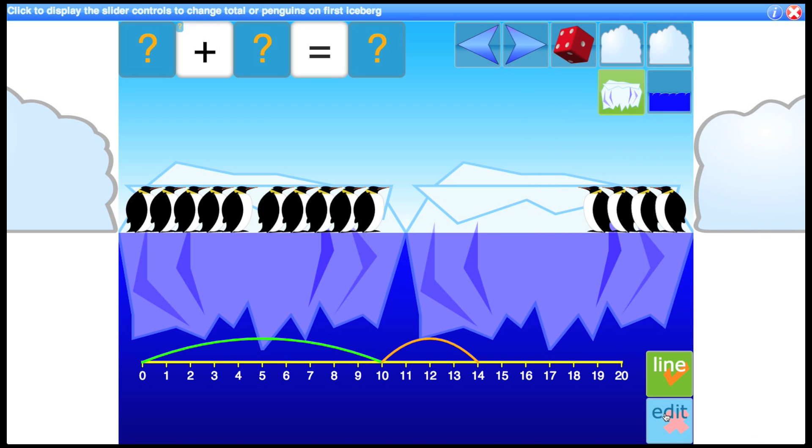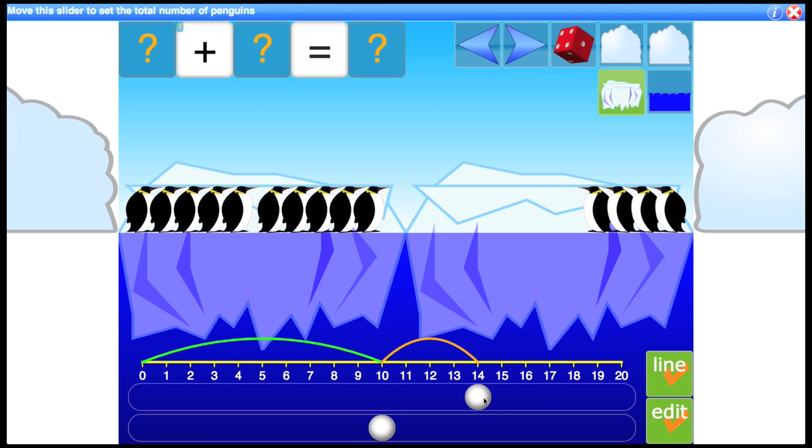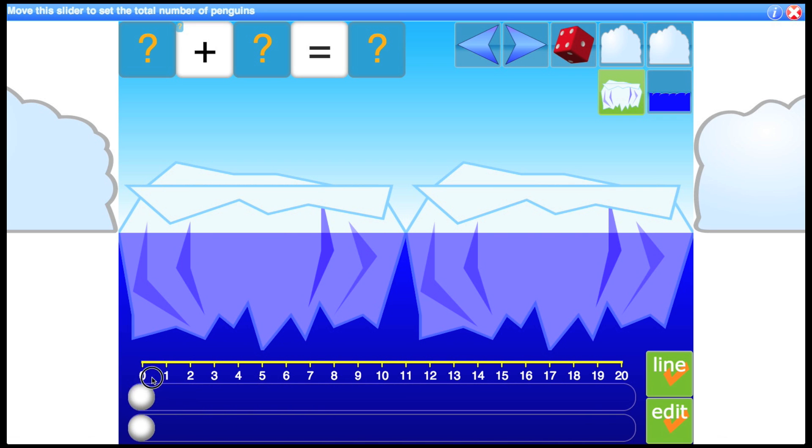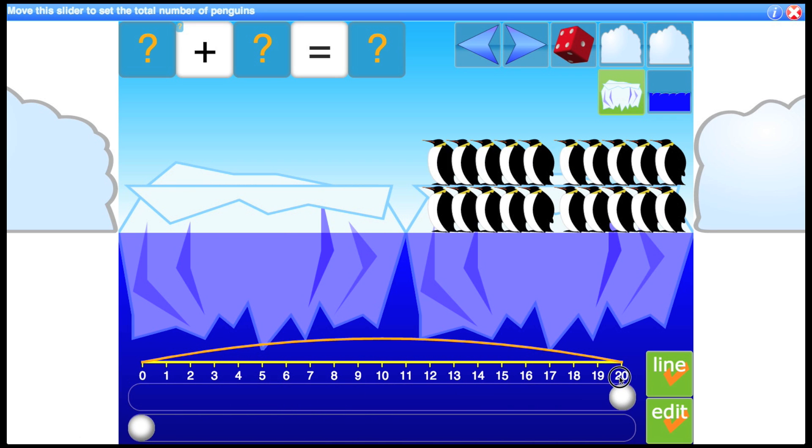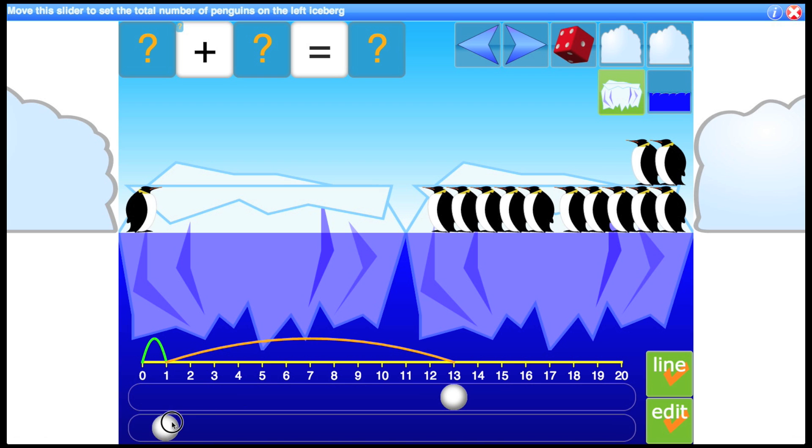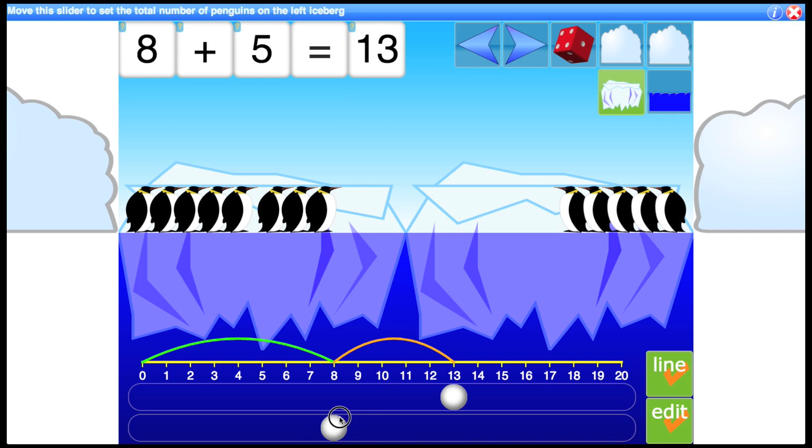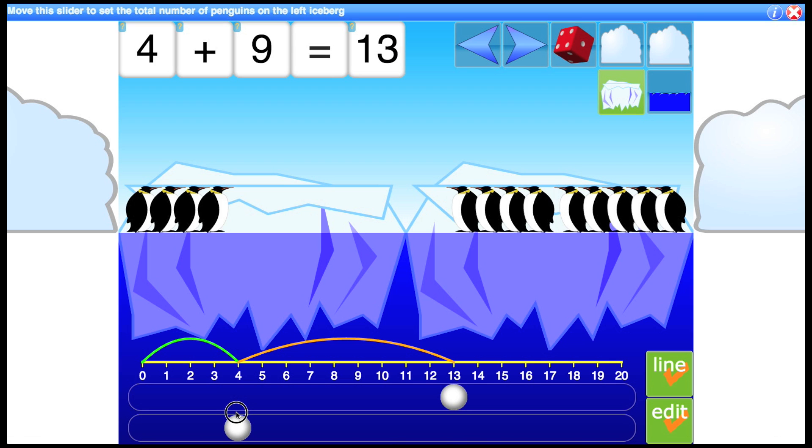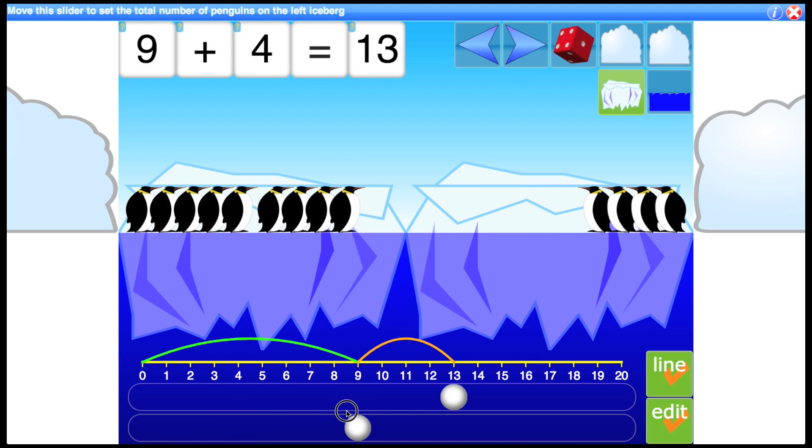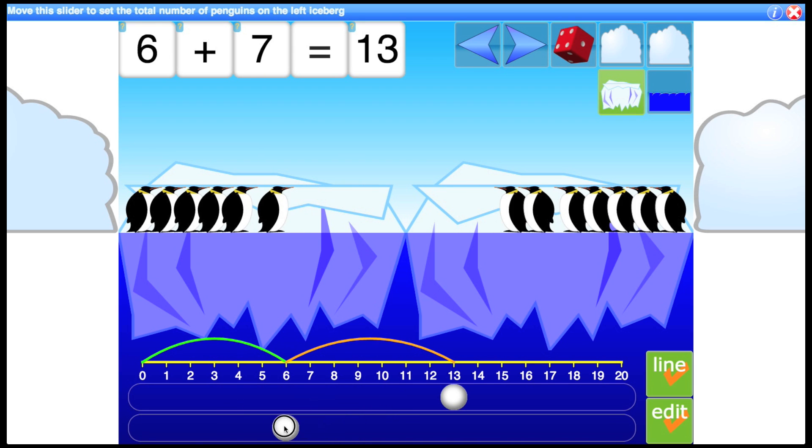Okay, now there's another way you can change the number of penguins which is by clicking this edit and we get two slider controls to appear. The first one sets the total, so we can see this instantly updates. So you can pick any number up to 20, and the second one is how many are on the first iceberg. So there's 6, 7, and we can see very quickly, and this would update the actual addition fact at the top as well. So it's a very nice pictorial way to show addition facts.